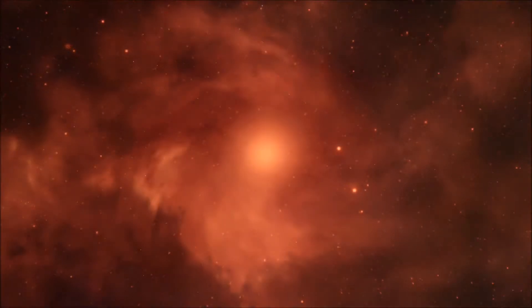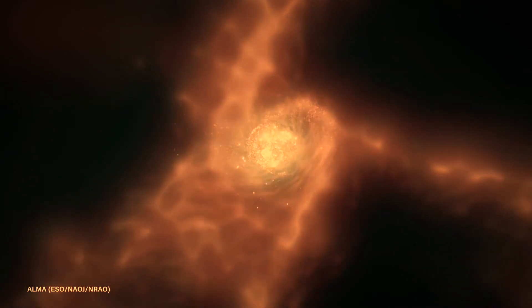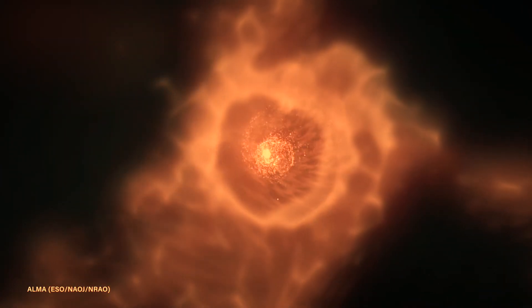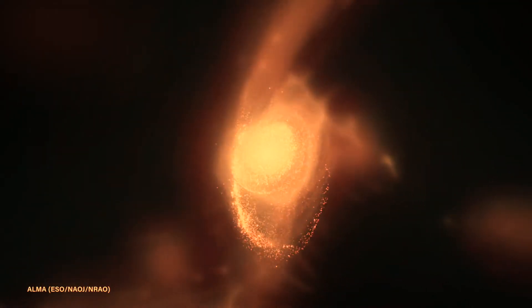Every star begins the same way: as a cloud of gas and dust in space known as a nebula. Eventually, gravity begins to pull that cloud together, compressing the gas into a tight sphere. As compression continues, it grows hotter and hotter until it grows bright, almost like a star.